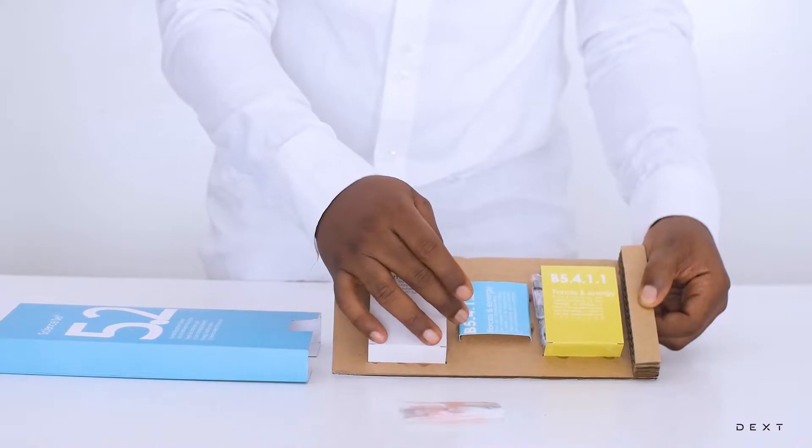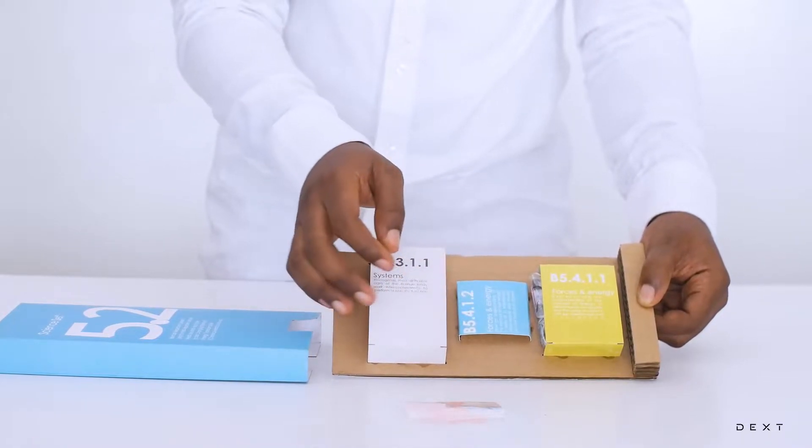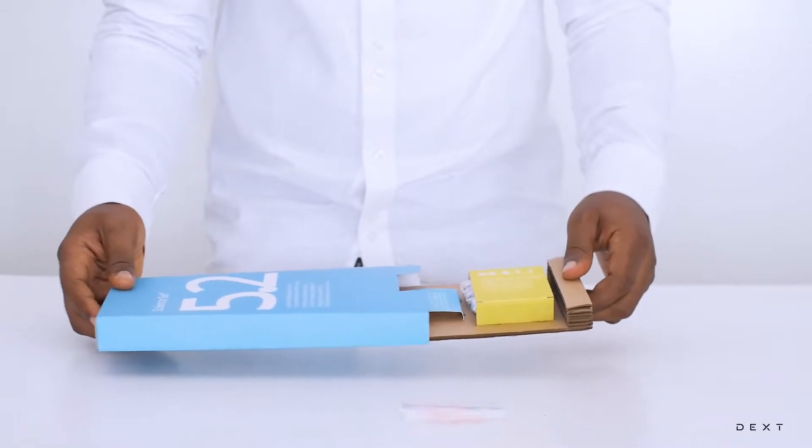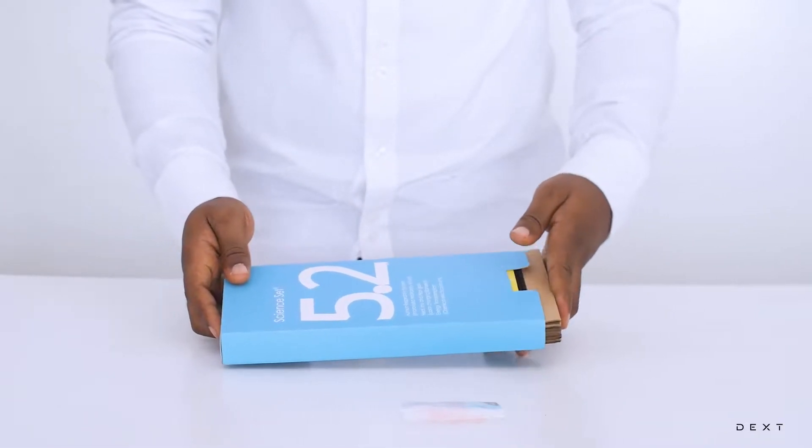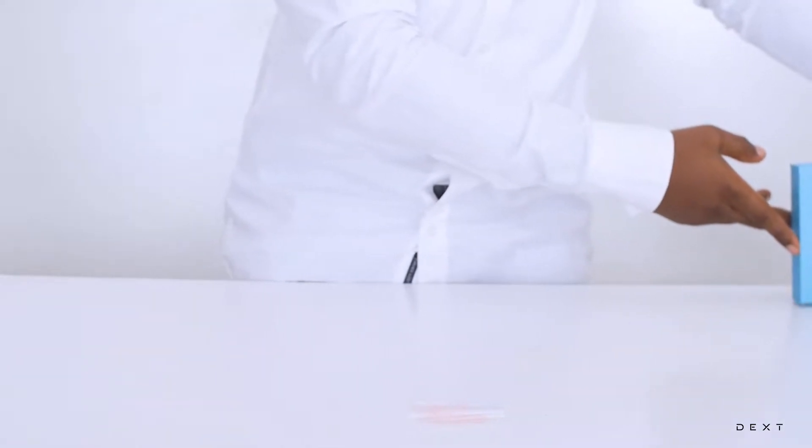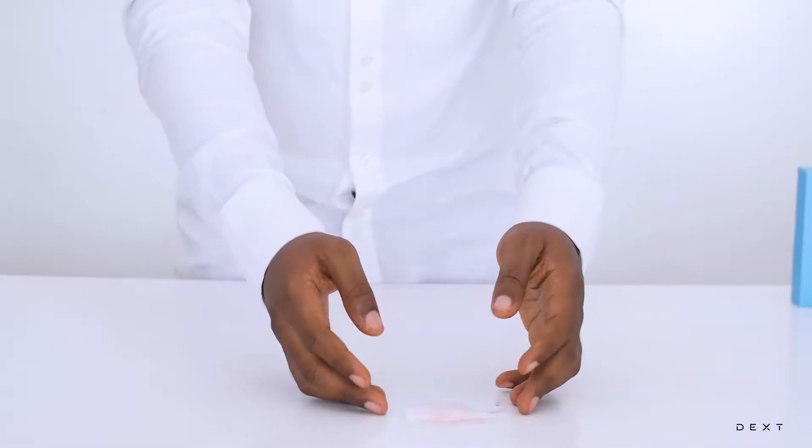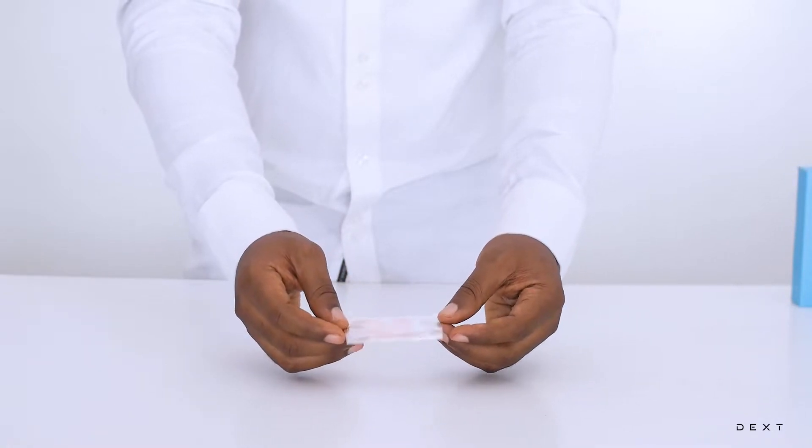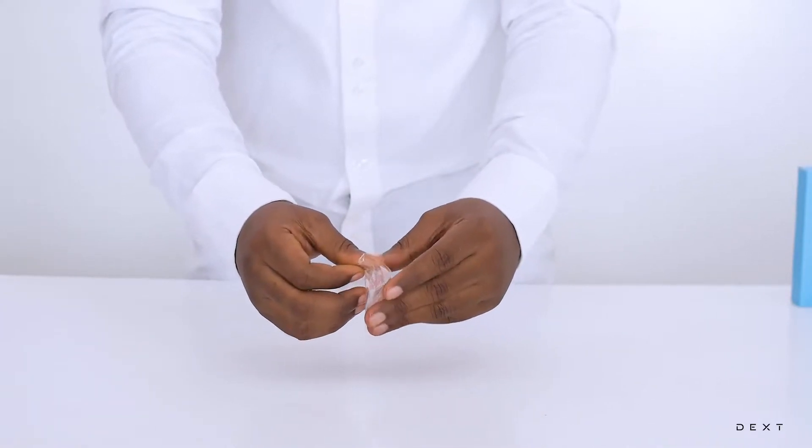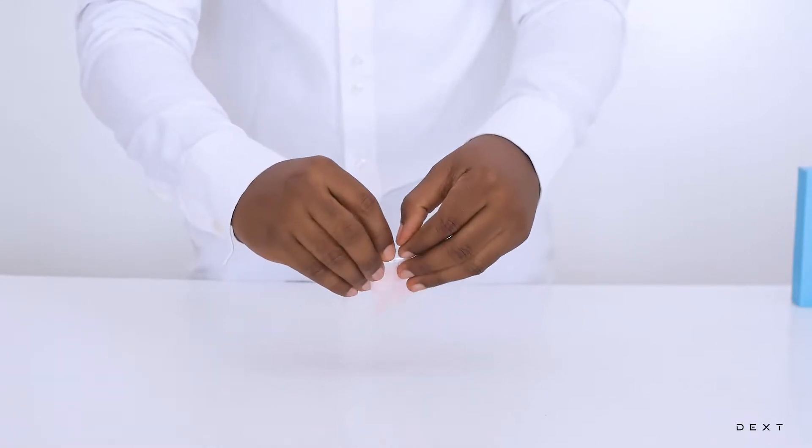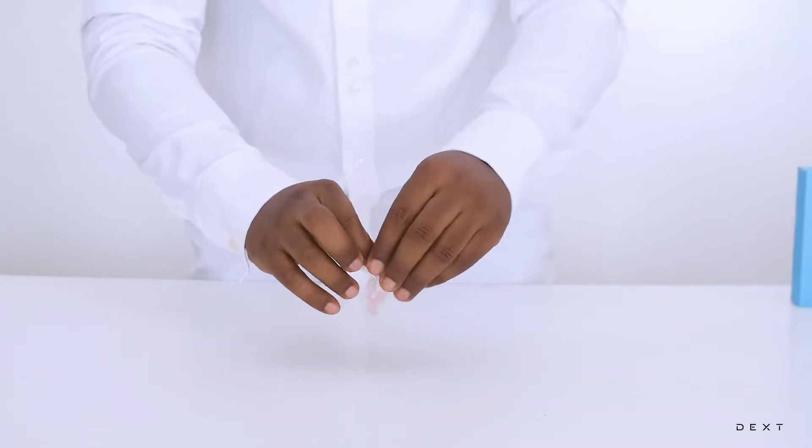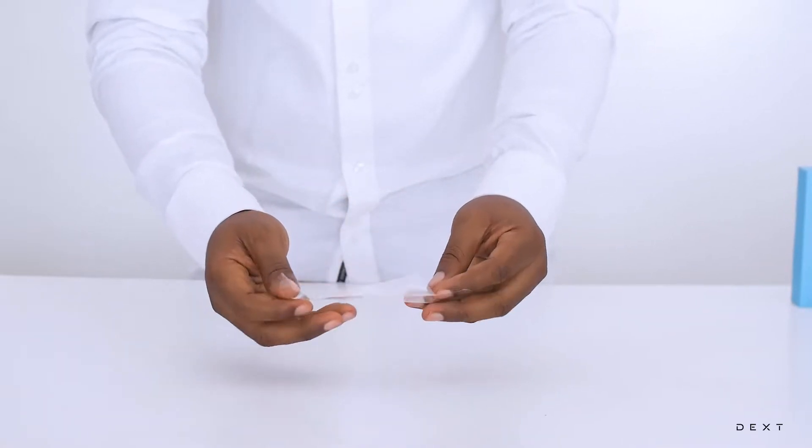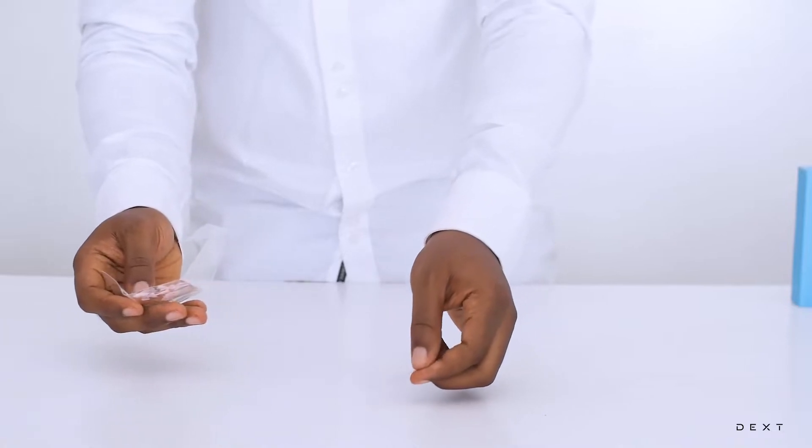We are going to be using material from the compartment B5.4.1.2. In there, we have a special filament. We are going to learn what happens when we add heat or remove heat from this special filament. So we are going to go ahead and open it up. You will find that there are two of them in there.